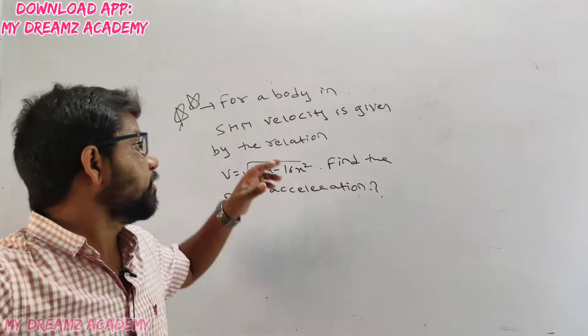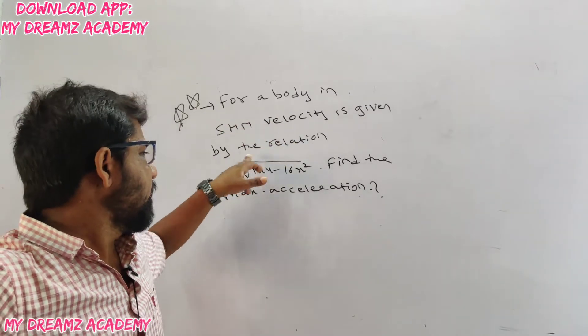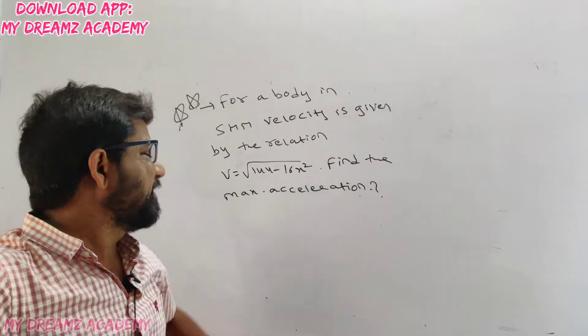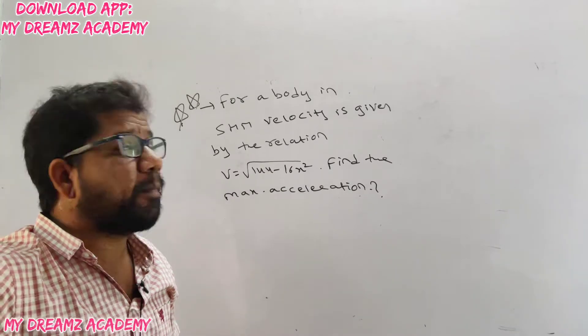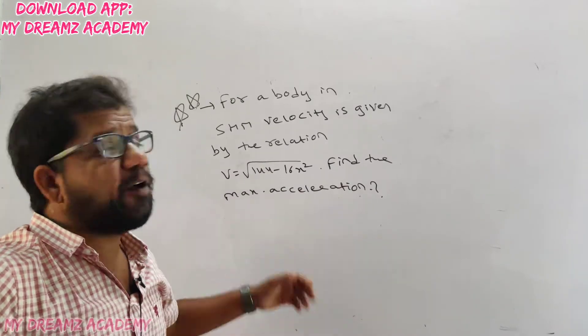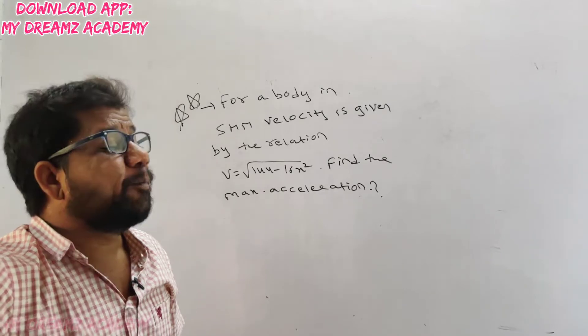Next question: for a body in SHM, velocity is given by v = √(144 − 16x²). Find the maximum acceleration.